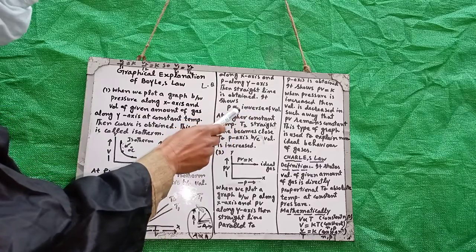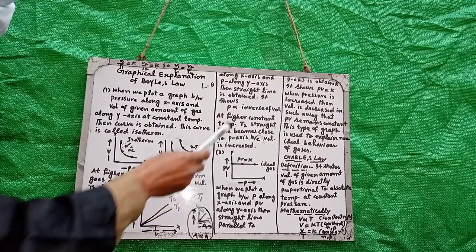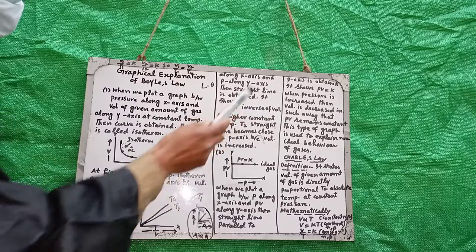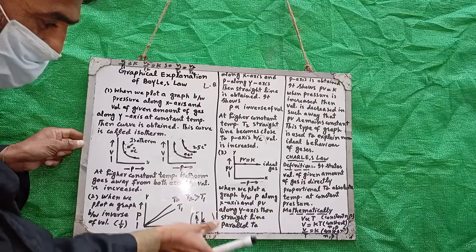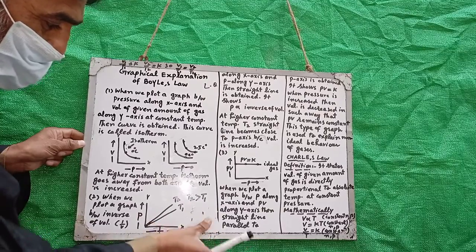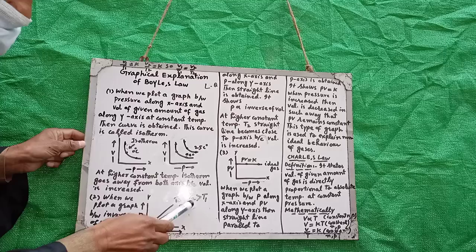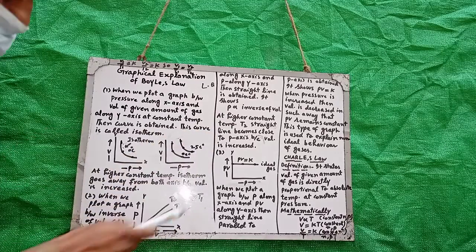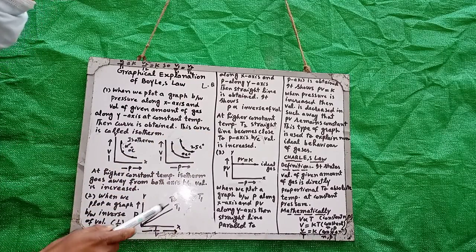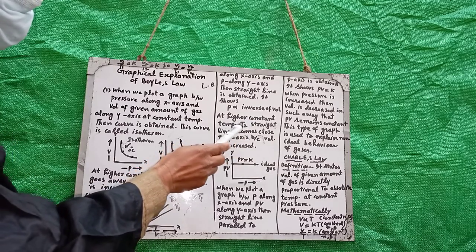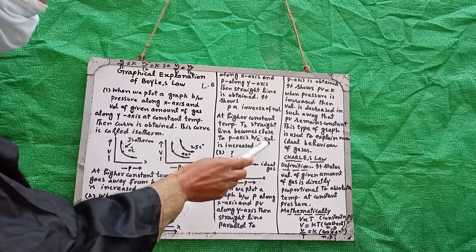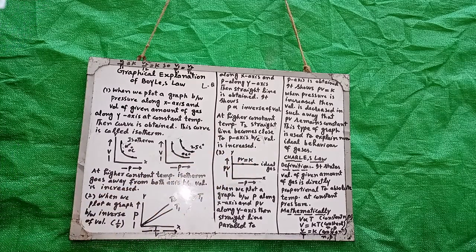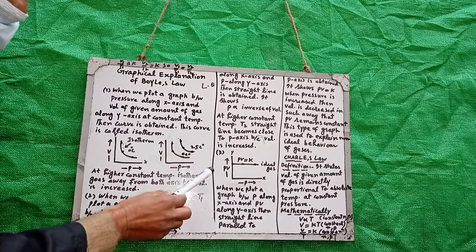It shows that pressure and inverse of volume are directly proportional — pressure is directly proportional to 1/V. At higher constant temperature T2 (where T2 > T1), the straight line becomes closer to the pressure axis, because the volume of the gas increases.